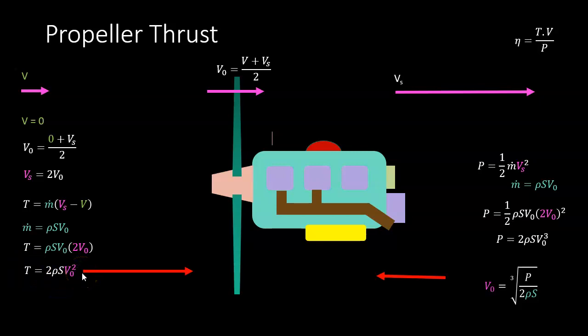I'll substitute in for V0. Instead of V0, I'm going to use the power divided by 2ρS to the power of one-third, and that V0 is squared, so that'll be squared here.